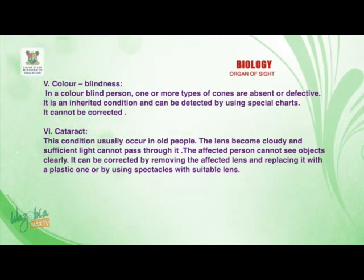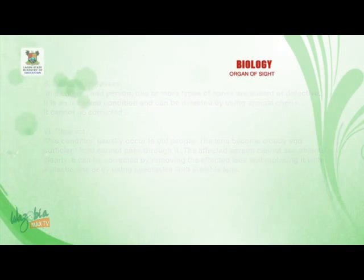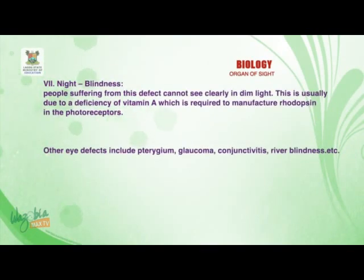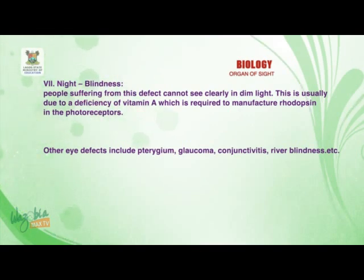The last defect I will discuss is night blindness. People suffering from this defect cannot see clearly in dim light. This is usually due to a deficiency of vitamin A, which is required to manufacture rhodopsin in the photoreceptors.